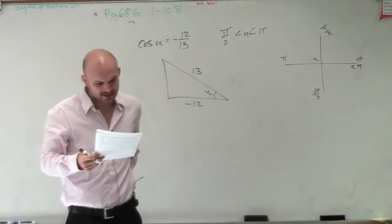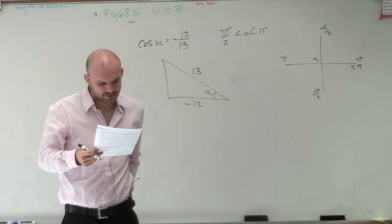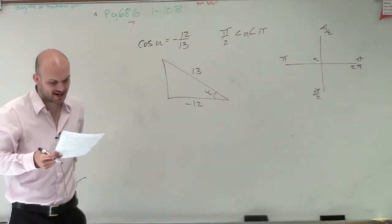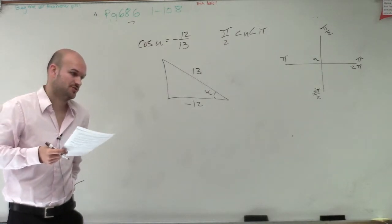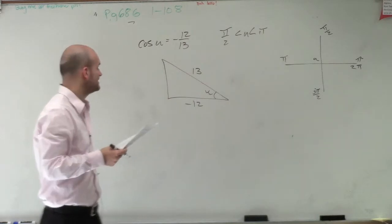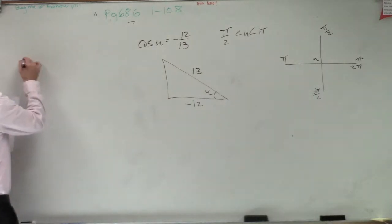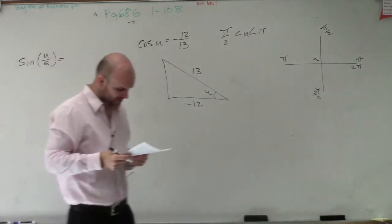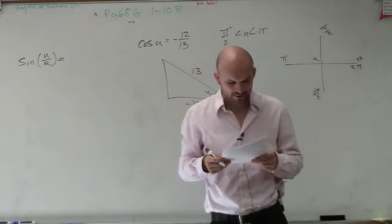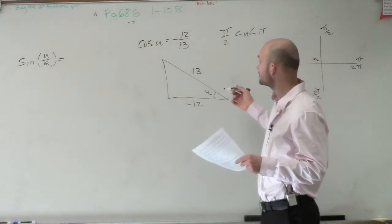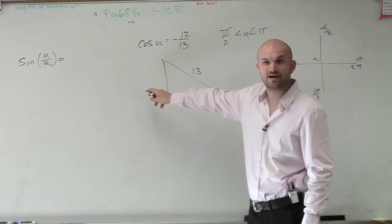So then it says, find the exact value of sine of u divided by 2. To find u divided by 2, we need to remember what the formula is, which you guys will be provided. I know that we're going to need to be able to figure out, so sine of u divided by 2, we're also going to have to figure out what this value is of the triangle.